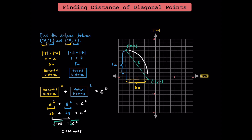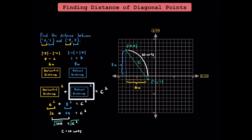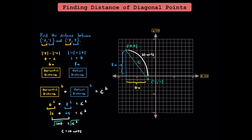Using this process, we can find the distance between any two points, including ones that are diagonal from each other. The distance between these two points is 10 units. To summarize: square the horizontal distance, square the vertical distance, add those two together, and take the square root to find the length of the diagonal. In the rest of this video, I'm going to go through five different examples. Some will have rational solutions, others will have irrational solutions. Let's do some math together.